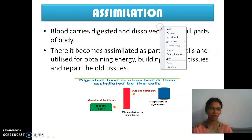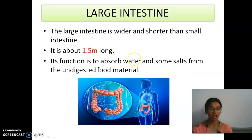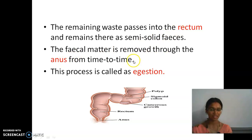After assimilation, we have egestion — sending out the unabsorbed food materials out of the body. The large intestine is about 1.5 meters long and also absorbs some of the undigested food like water and salts. The remaining is sent out through the anus and rectum. The solid waste sent out by the human body is called feces, stored in the rectum and removed using the anus. And thus the digestion process ends.